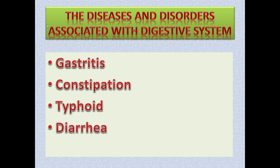Hi dear children, this is the third video for grade 11 students based on unit 6: biological processes in life. In the previous lesson you learned the digestive system — its structure, function, and the process of digestion. In this video I will be discussing the diseases and disorders associated with the digestive system. We will focus on four commonly reported diseases: gastritis, constipation, typhoid, and diarrhea.